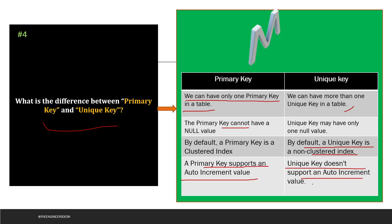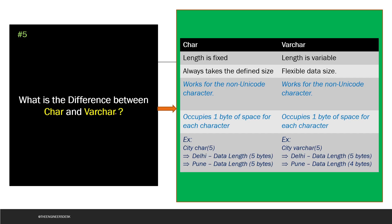The fifth question covers the differences between CHAR, VARCHAR, NCHAR, and NVARCHAR — the interviewer may ask any combination of these four. CHAR has a fixed length and always takes the defined size, while VARCHAR has a variable length with a flexible data size. Both CHAR and VARCHAR work with non-Unicode characters, where each character occupies one byte of space.